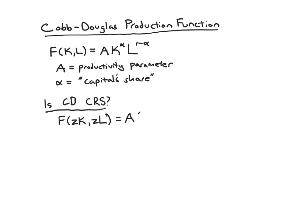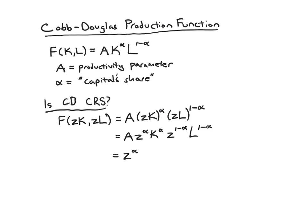If we plug in ZK for K, we get ZK to the alpha. We plug in ZL to the 1 minus alpha. We then rearrange terms to see if this collapses back down to Z times the original production function. Splitting it out using standard rules for exponents, we get Z to the alpha times K to the alpha, and Z to the 1 minus alpha times L to the 1 minus alpha. Grouping all the Z terms together at the beginning, we have Z to the alpha times Z to the 1 minus alpha, with A times K to the alpha times L to the 1 minus alpha at the end — which is our original production function.